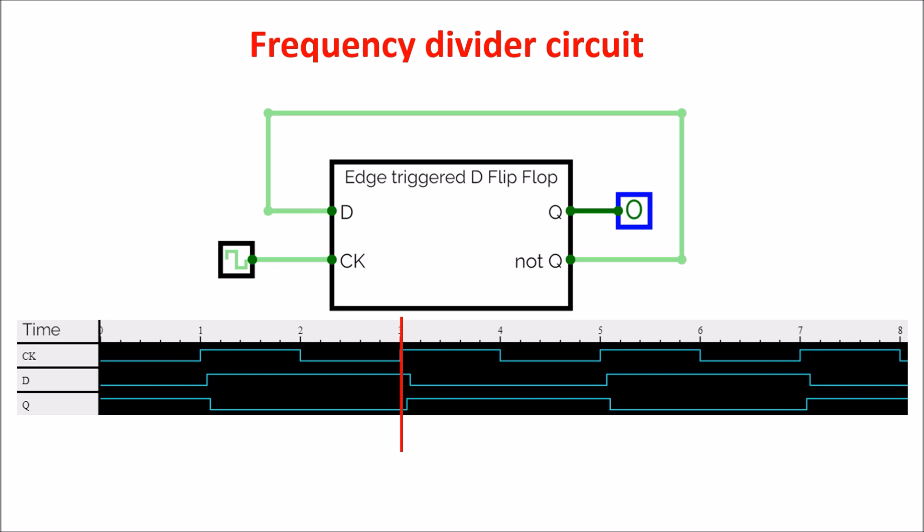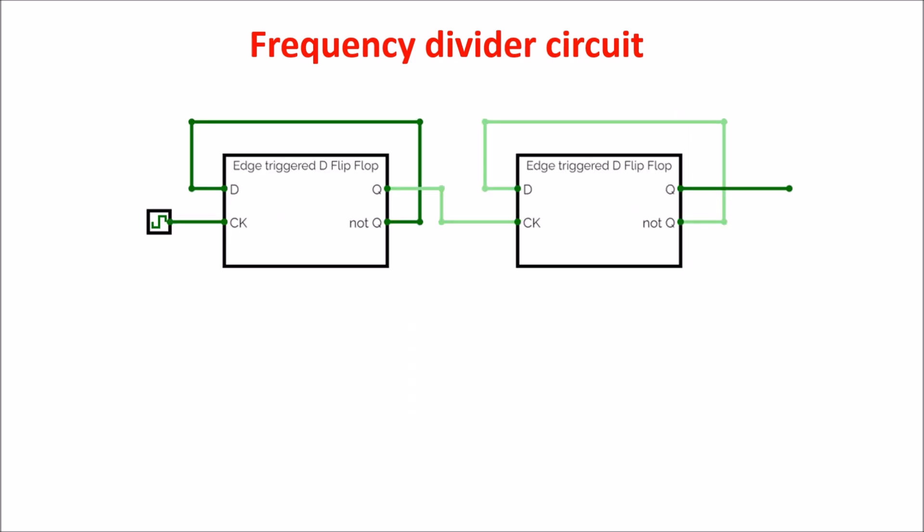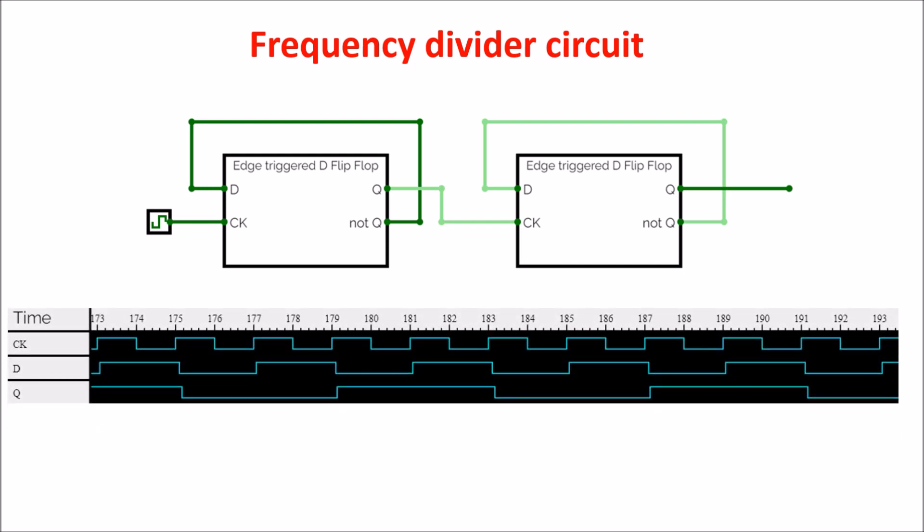So we ended up cutting the clock frequency in half. If we want to divide the clock by 4, we connect 2 D flip-flops in this way. The time simulation is this, and as you can see the Q period of oscillation lasts 4 clock cycles. In this way we can divide by any multiple of 2.